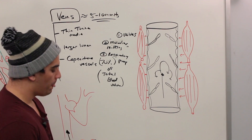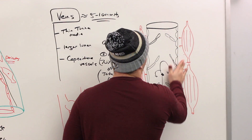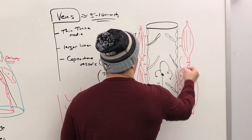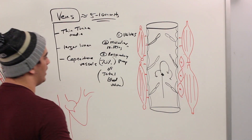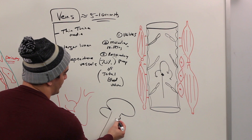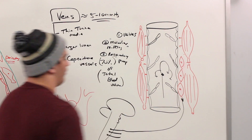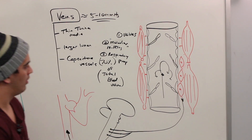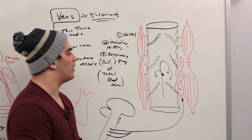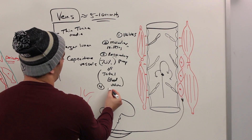The fourth adaptation is sympathetic tone. Veins do have a tunica media with some smooth muscle cells. The sympathetic nervous system innervates this tunica media and can cause venoconstriction, which also helps push blood back toward the heart.